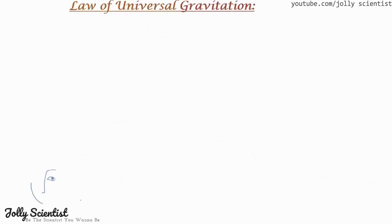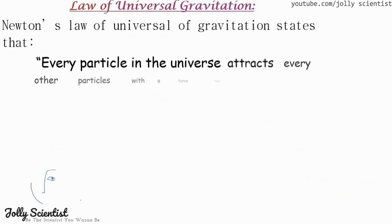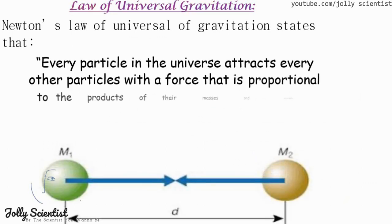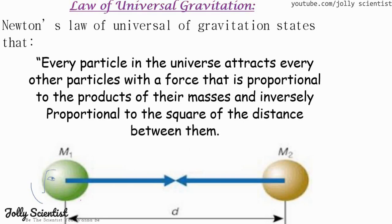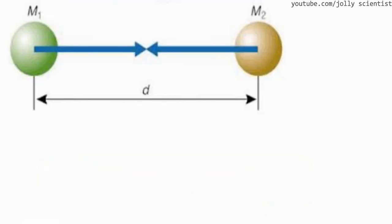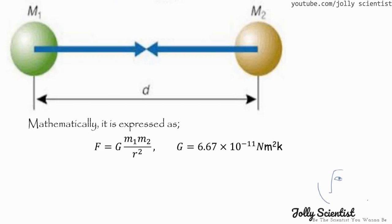The law of universal gravitation. According to Isaac Newton, the universal law of gravitation states that every particle in the universe attracts every other particle with a force that is proportional to the product of their masses and inversely proportional to the square of the distance between them. Mathematically, it is expressed as F equals G times M1 times M2 divided by R squared, where G is 6.67 times 10 to the power of negative 11 N·m² per kg².